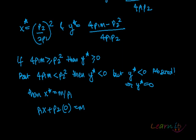So if 4P1m is greater than or equal to P2 squared, then these are your Marshallian demands - x star equals P2 upon 2P1 squared and y star equals 4P1m minus P2 squared upon 4P1P2. If 4P1m is less than P2 squared, then y star would be negative, which is absurd because negative quantities are not allowed. Hence y star would be zero. So substituting y star zero in the budget equation, we get P1x plus P2 times zero equals m, so x star would be m by P1 in that case.